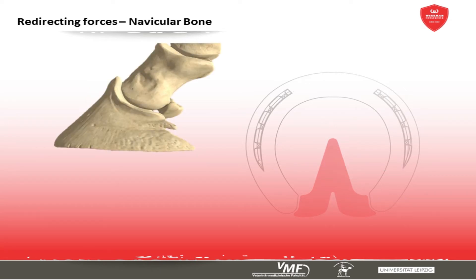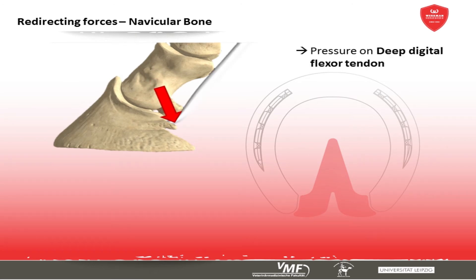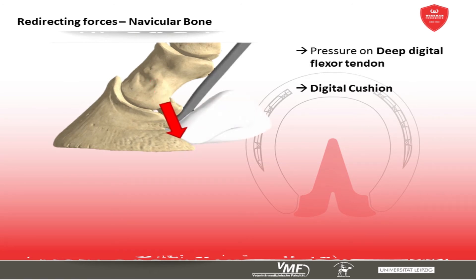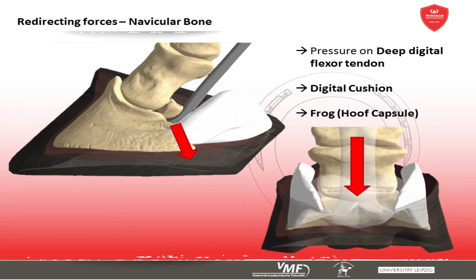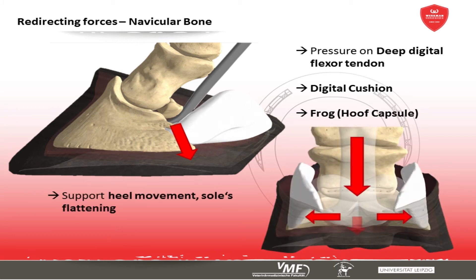The navicular bone presses onto the deep digital flexor tendon, which will thereafter compress the digital cushion and the frog. This redirects the transmitted forces, as the cushion will press medial and lateral against the hoof cartilage, and the frog will press further distal against the hoof's bars and sole. These redirected forces will further support the outward movement of the heels in mid-stance phase, support the flattening of the sole concavity, and cause a slight broadening of the visible frog itself.